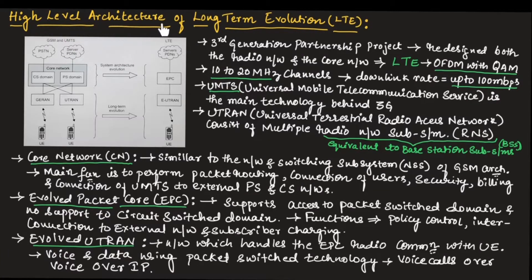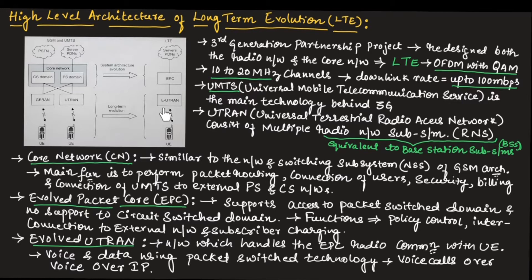This diagram shows the architecture for Long-Term Evolution. It also shows GSM as well as UMTS, where UMTS is Universal Mobile Telecommunication Service. GSM is related to the second generation system, UMTS to the third generation system, and LTE is Long-Term Evolution, related to the fourth generation system. In GSM we have a circuit switch domain as the core network, and in UMTS we have a packet switch domain as the core network. In Long-Term Evolution, the circuit switch domain is kept as-is, but there is evolution in the packet switch domain section.